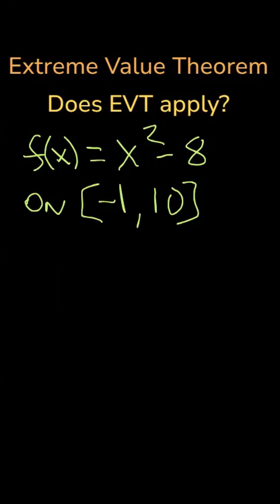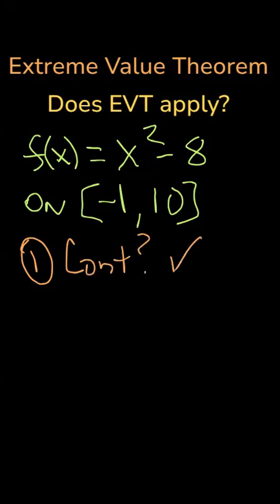Here's how this applies. If we have the function f of x equals x squared minus 8 on the closed interval negative 1 to 10, does the extreme value theorem apply? First thing we must do is check the conditions. Is it continuous? Yes, this is continuous because f is a polynomial. Two, is the interval closed? Yes, the interval goes from negative 1 to 10, and the endpoints are included.